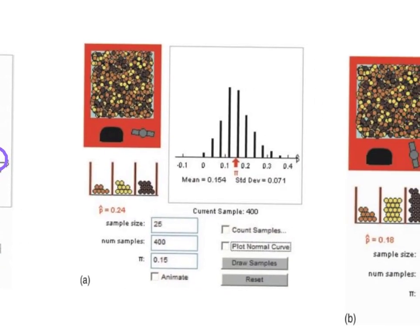In the third situation, the population proportion has been changed to 0.15, so only 15% of candies are orange. The sample size is again 25, with 400 samples. The distribution is centered right where we expect, but there's quite a bit of variation — we got as high as 0.35 and as low as 0, meaning some samples had no orange candies whatsoever. The variation is quite wide and we're not very confident about the answer for any particular sample.